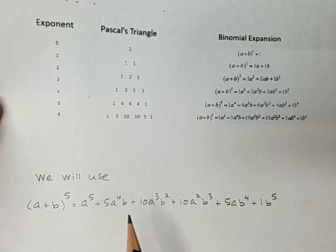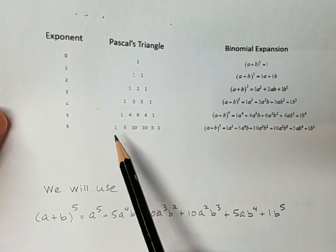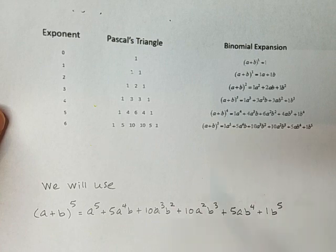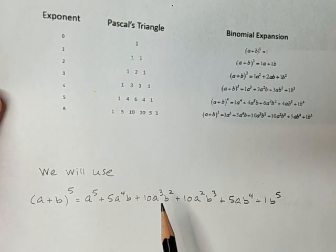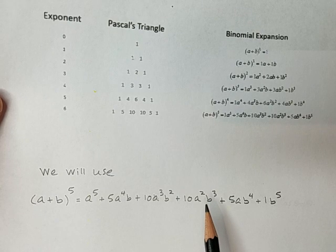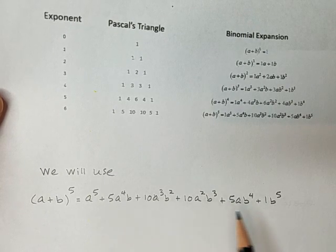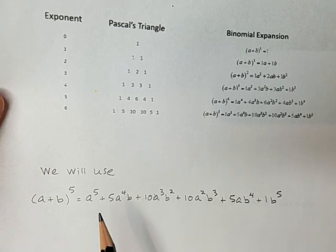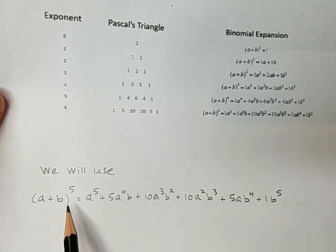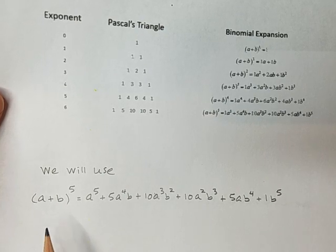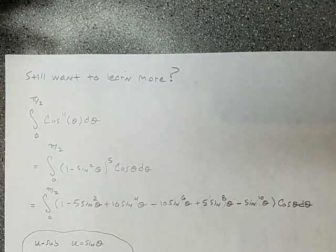So Pascal's Triangle gives you the coefficients of the binomial expansion, and you can definitely see a pattern with the powers as you go from left to right in the expansion. So it saves us all the work of actually having to multiply a plus b times itself five times. So let's consider doing it that way.